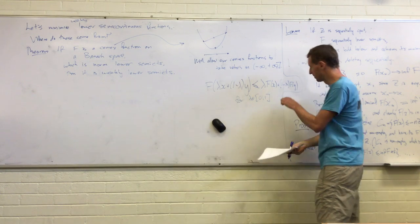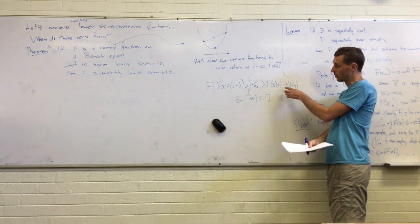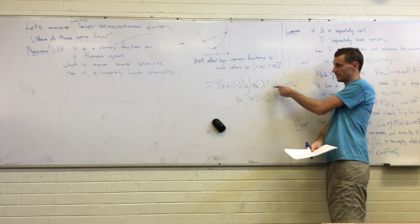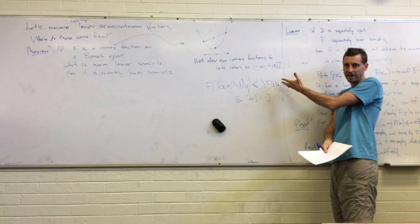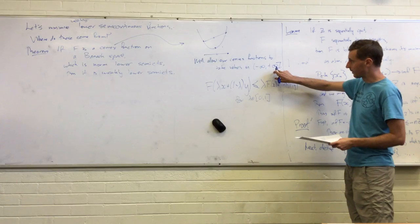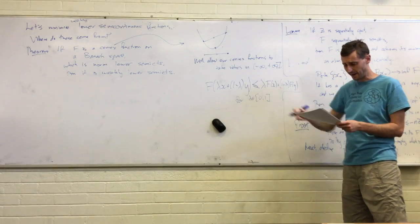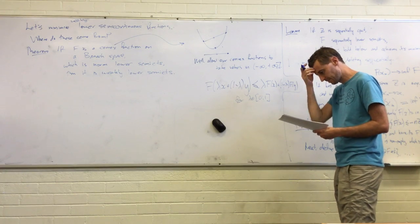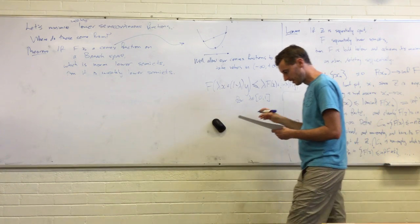But if you pick an x or a y where the convex function takes the value plus infinity, then this inequality just becomes trivial for lambda in that set has a plus infinity so we don't care. So, allowing plus infinity is really allowing lots more functions to our classical convex functions.